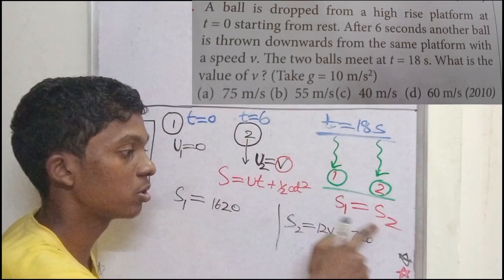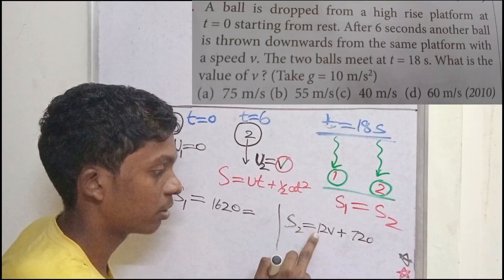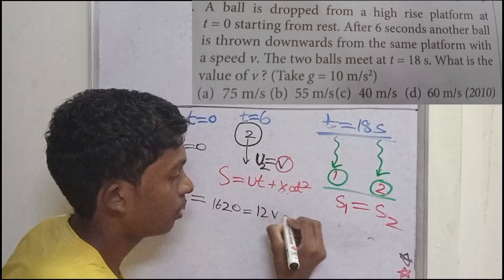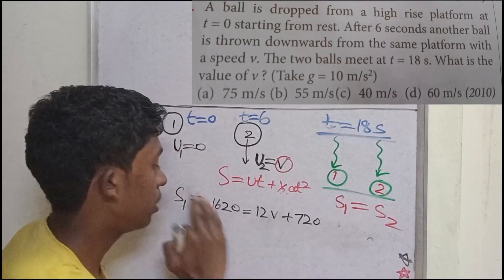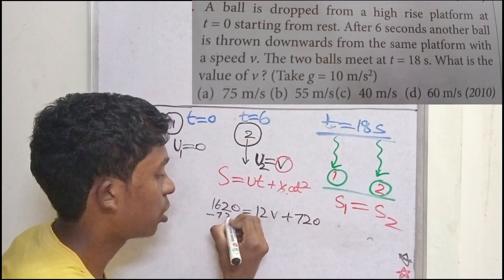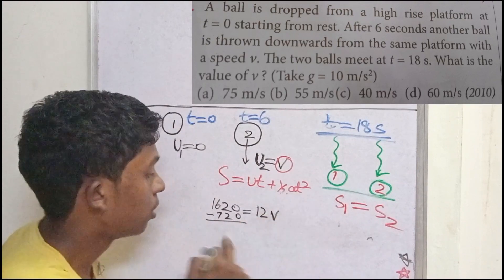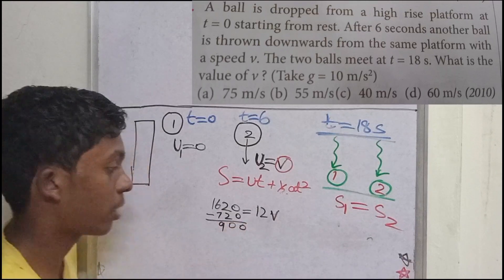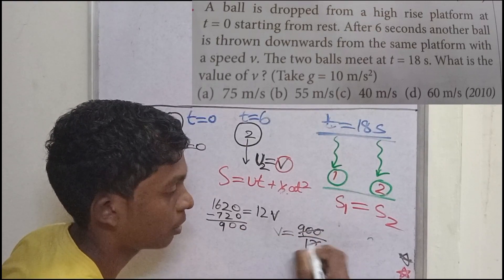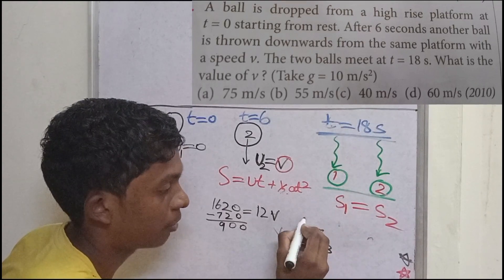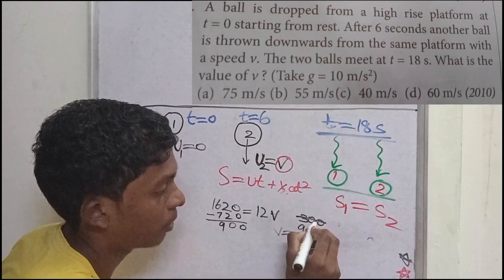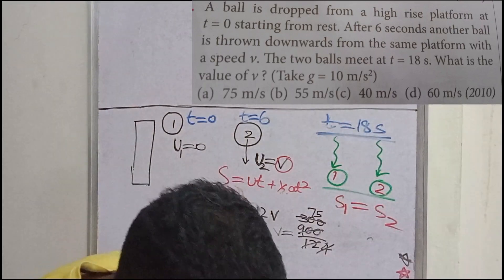Setting S1 equal to S2: S1 equals half into 10 into 18 squared equals 1620. So 1620 equals 12V plus 720. Therefore 12V equals 1620 minus 720 equals 900. So V equals 900 by 12 equals 75 meters per second. The answer is option A.